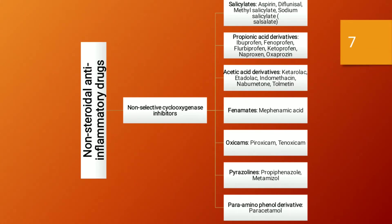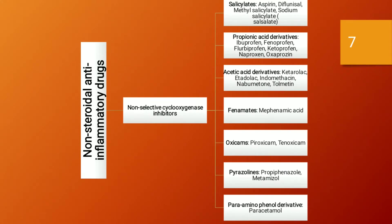The classification of NSAIDs begins with non-selective cyclooxygenase inhibitors in several chemical classes. First, salicylates — examples include aspirin, diflunisal, methyl salicylate, and sodium salicylate. Second, propionic acid derivatives — examples include ibuprofen, fenoprofen, flurbiprofen, ketoprofen, naproxen, and oxaprozin. Third, acetic acid derivatives — examples include ketorolac, etodolac, indomethacin, nabumetone, and tolmetin. Fourth, fenamates — example is mefenamic acid. Fifth, oxicams — examples are piroxicam and tenoxicam.